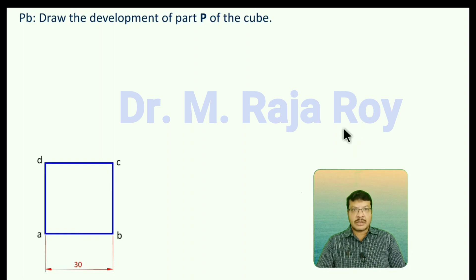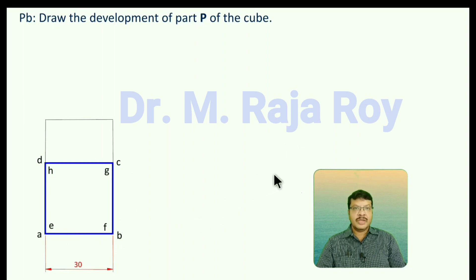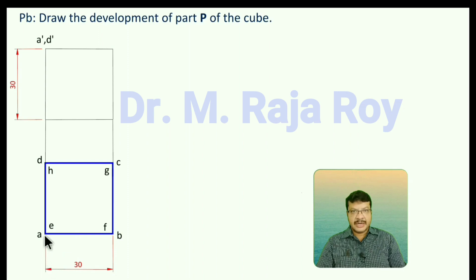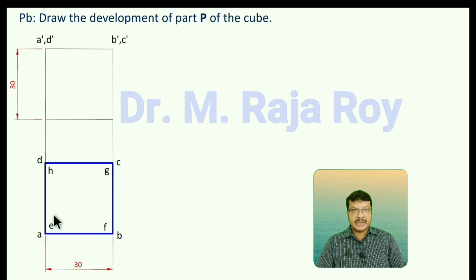Call the top base as A, B, C, D, and the bottom base as E, F, G, H. Then project the front view. In the front view, we have to represent the height, which is again 30. Project these points to the front view. Here you will get A' behind E' at the top base, and B' behind C'. In the bottom side, E', H' here and F', G' here.